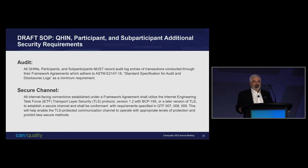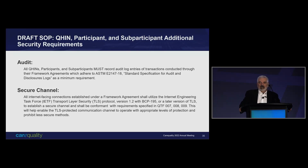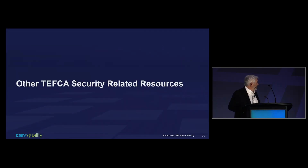Secure channel: we are requiring that the internet-facing communication paths between QHINs, participants, and now sub-participants utilize TLS 1.2 with BCP, so that insecure cipher suites are not used and handshaking activities when sessions are established cannot roll back to earlier insecure versions of TLS. That ship sailed and there are too many obvious vulnerabilities associated with those older versions. That brings me to the end of the discussion on the proposed new requirements.